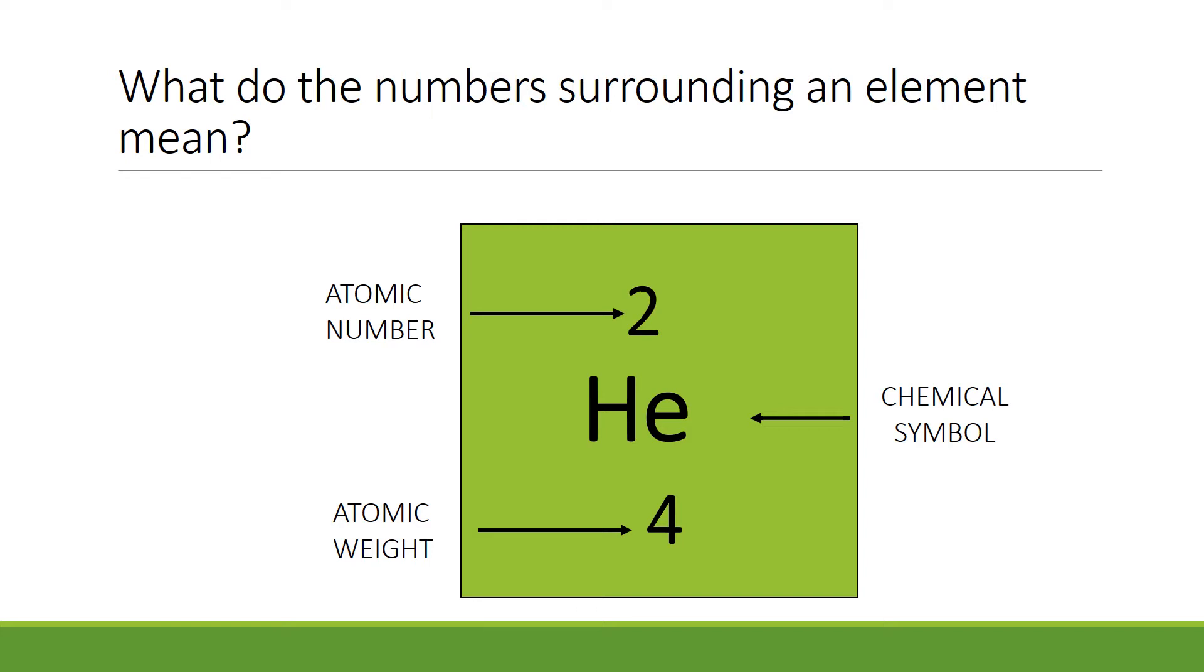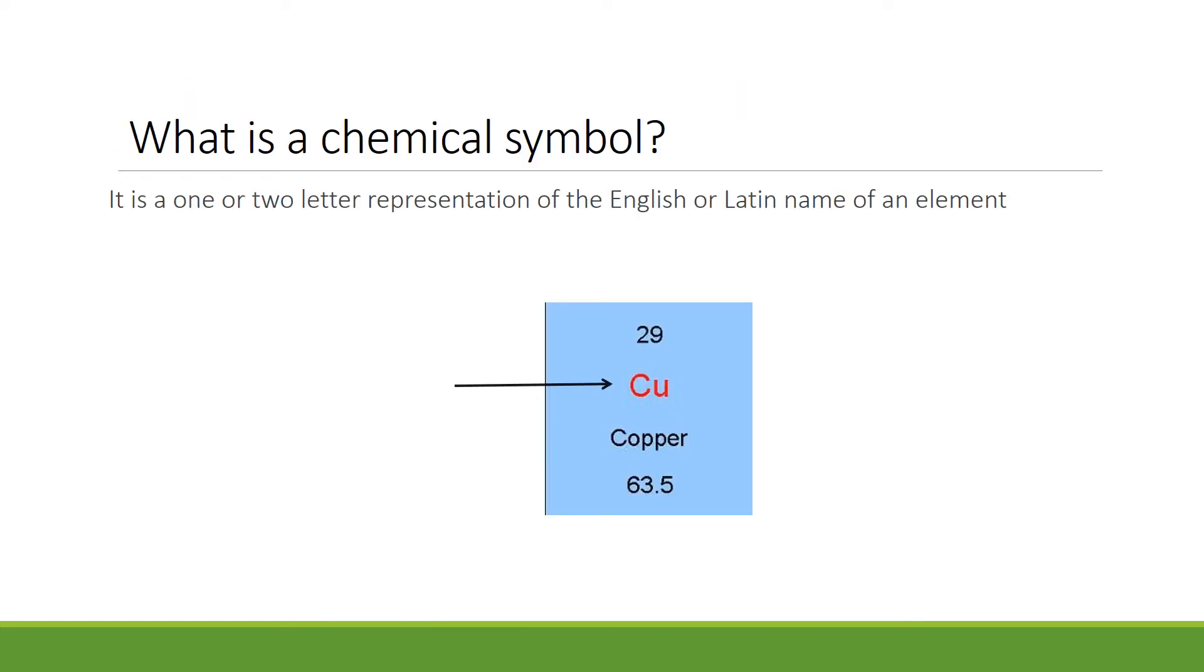This is the element copper, taken from the periodic table. The question is, what is a chemical symbol? It is a one or two letter representation of either the English or the Latin name of an element. In this case, for copper, it's capital C, small case U. The first letter is always capitalized. The second letter is always a small case letter.